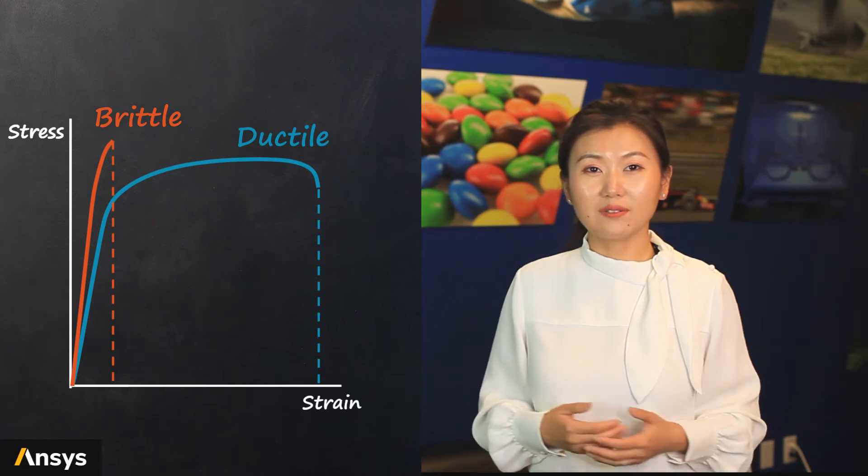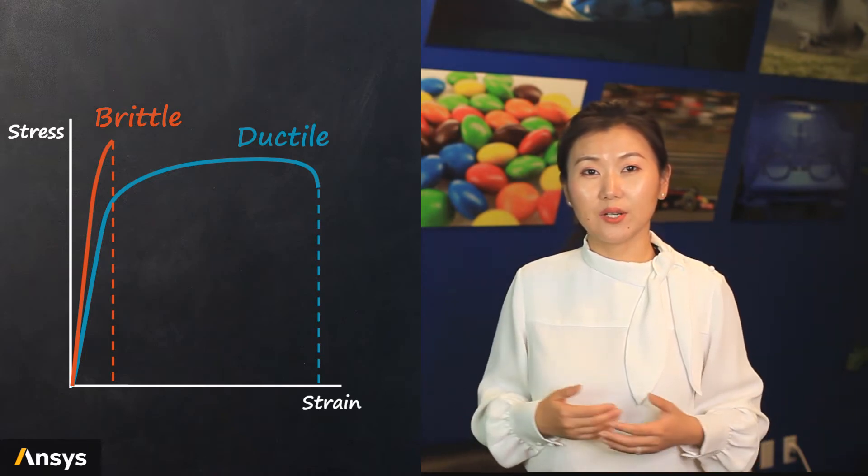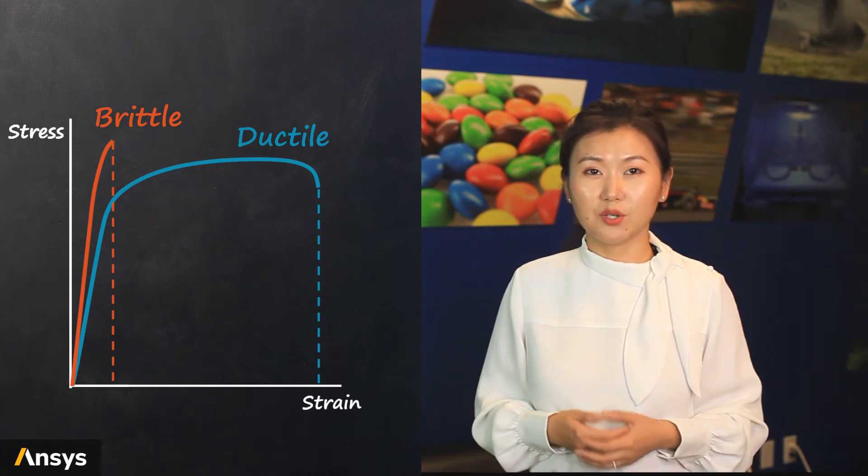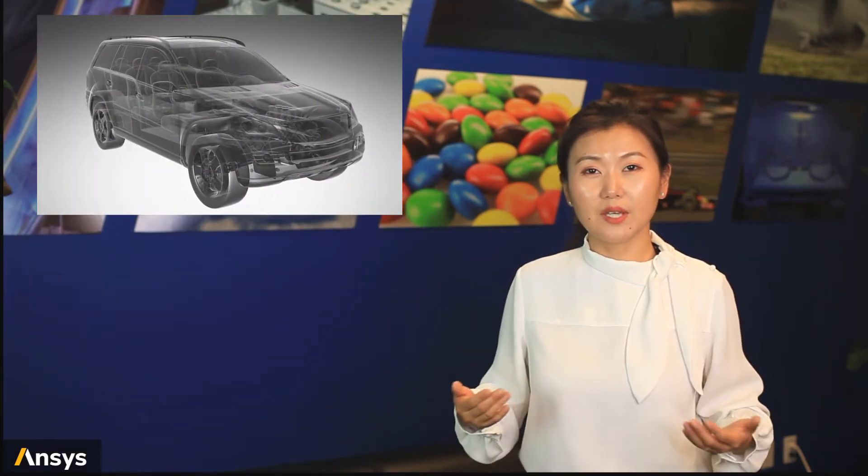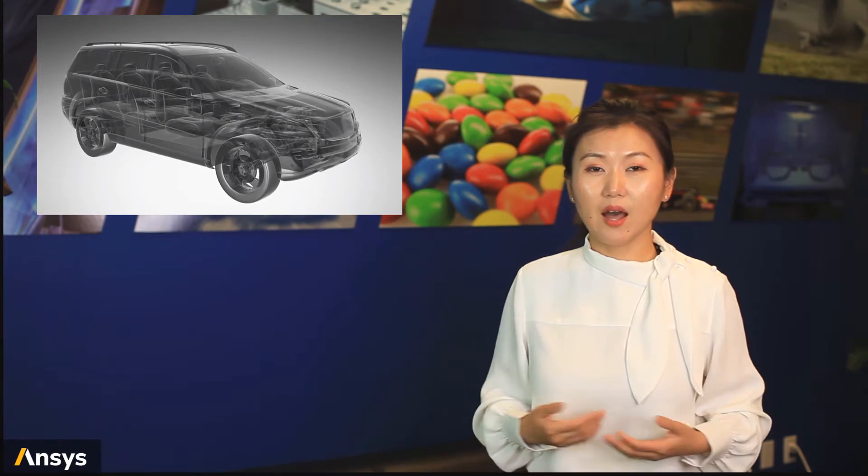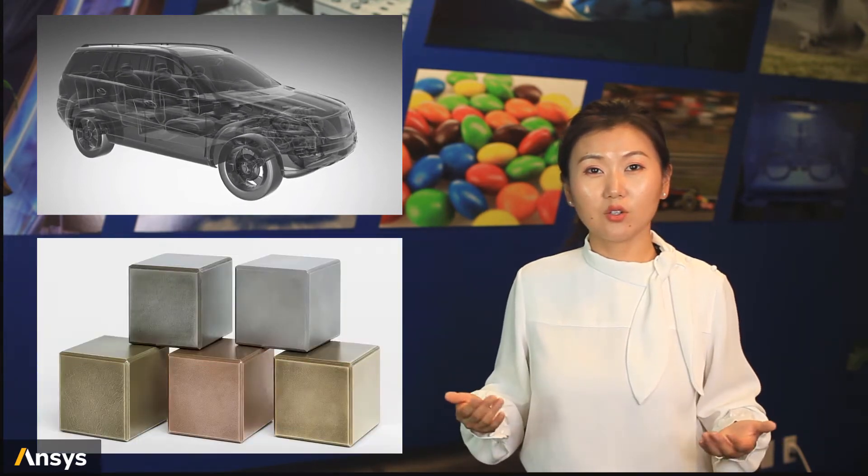As we mentioned before, most metal materials fall into the category of ductile materials instead of brittle material. For the car crash example, aluminum is a common material for the car frame. Other metals such as steel, copper, and various alloys are all ductile materials.